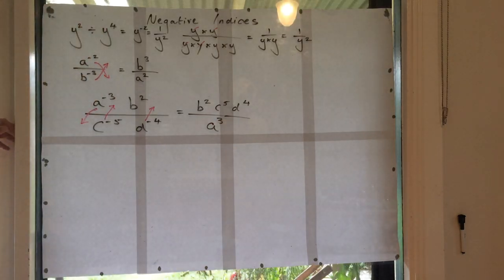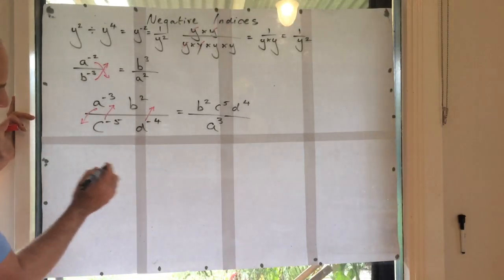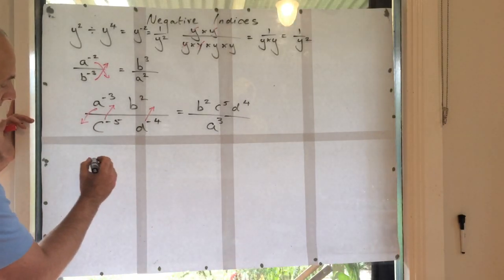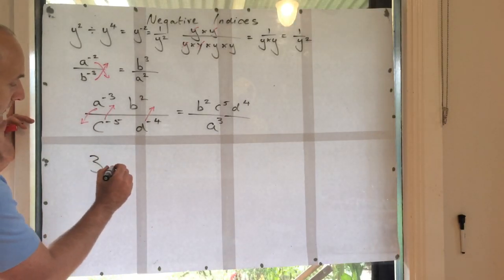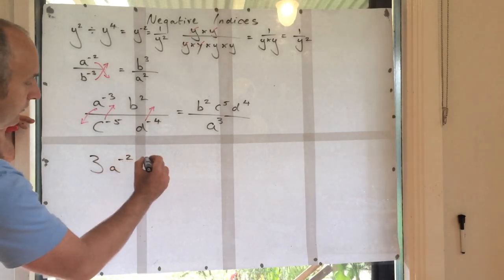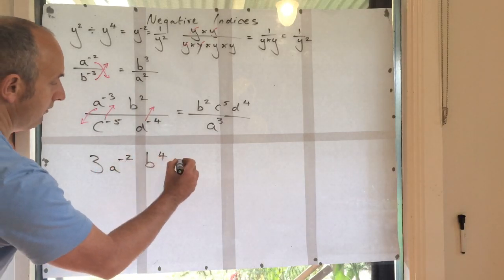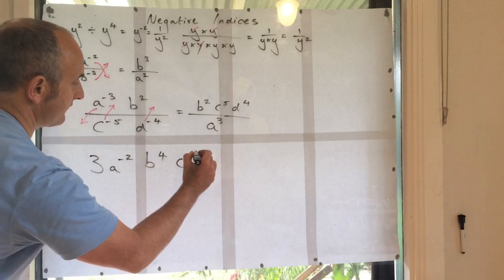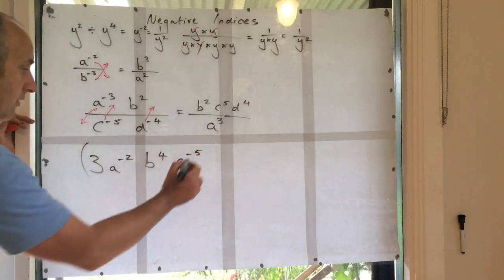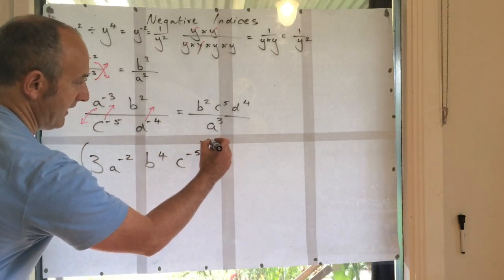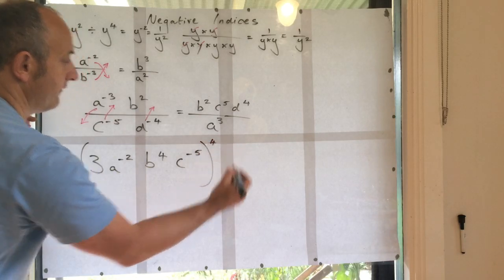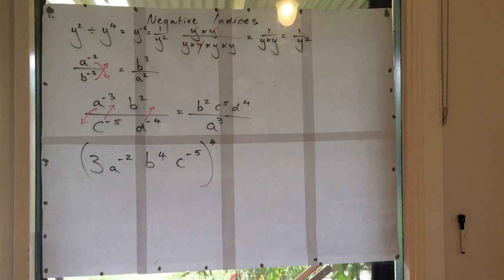What about this? What about if I write this? 3, a to the minus 2, b to the 4, c to the minus 5, or to the power of 4, so that means everything's to the power of 4.